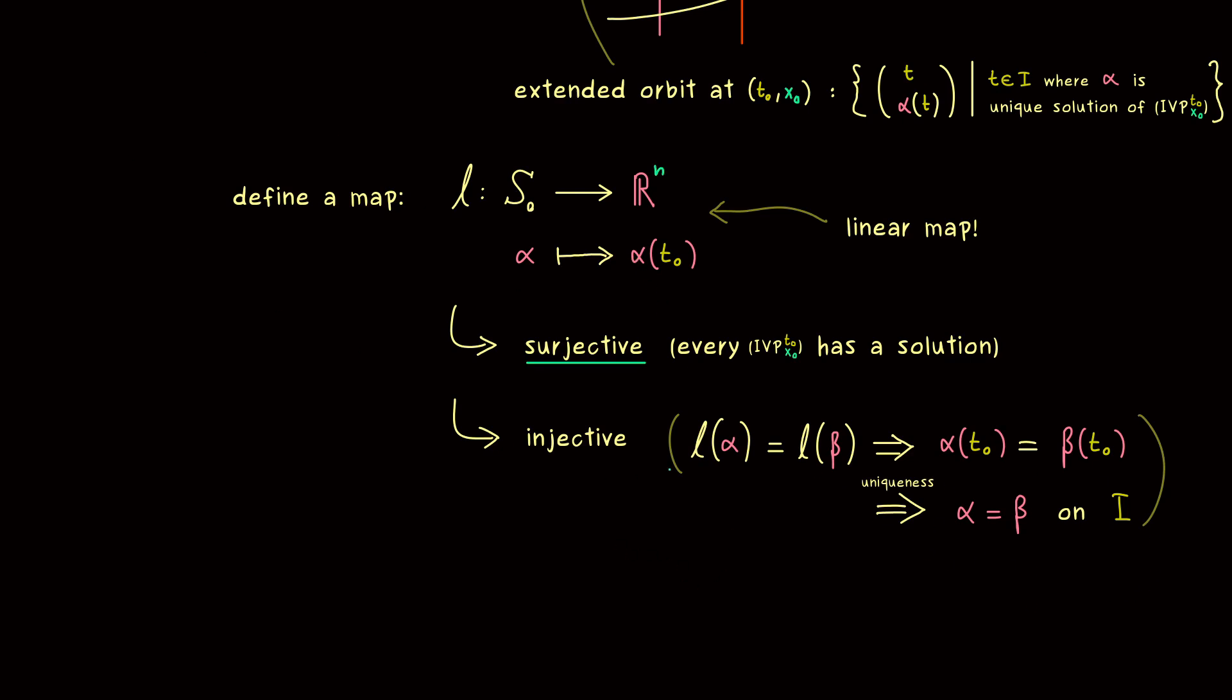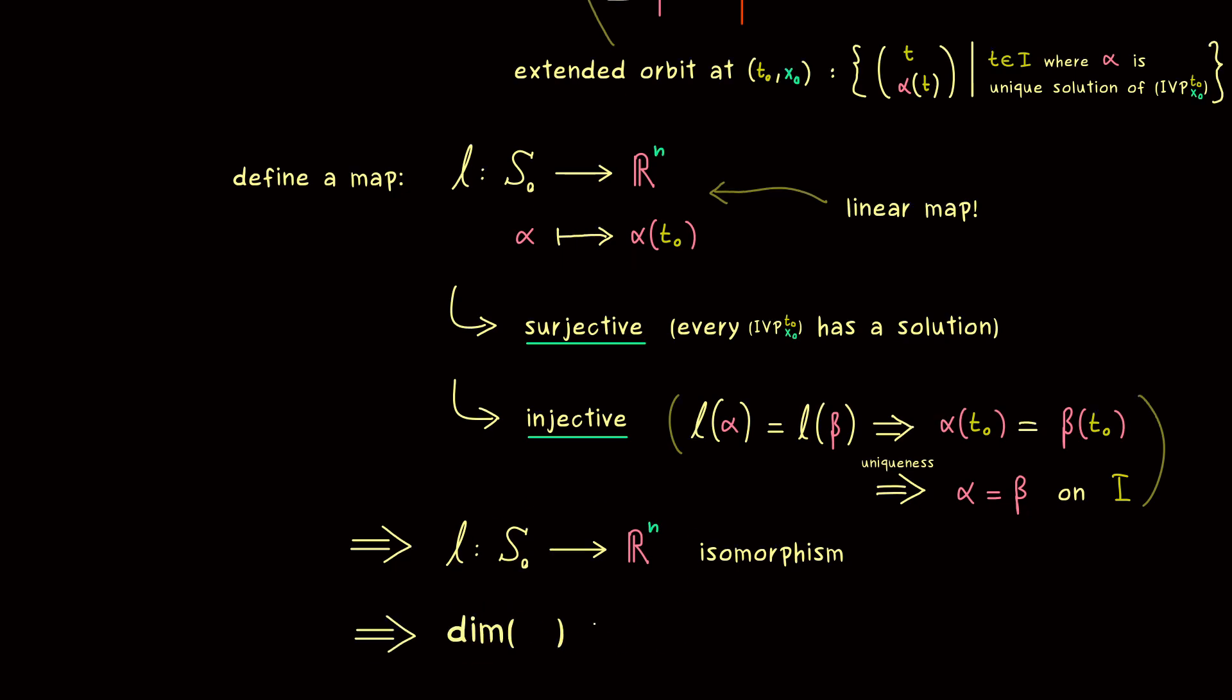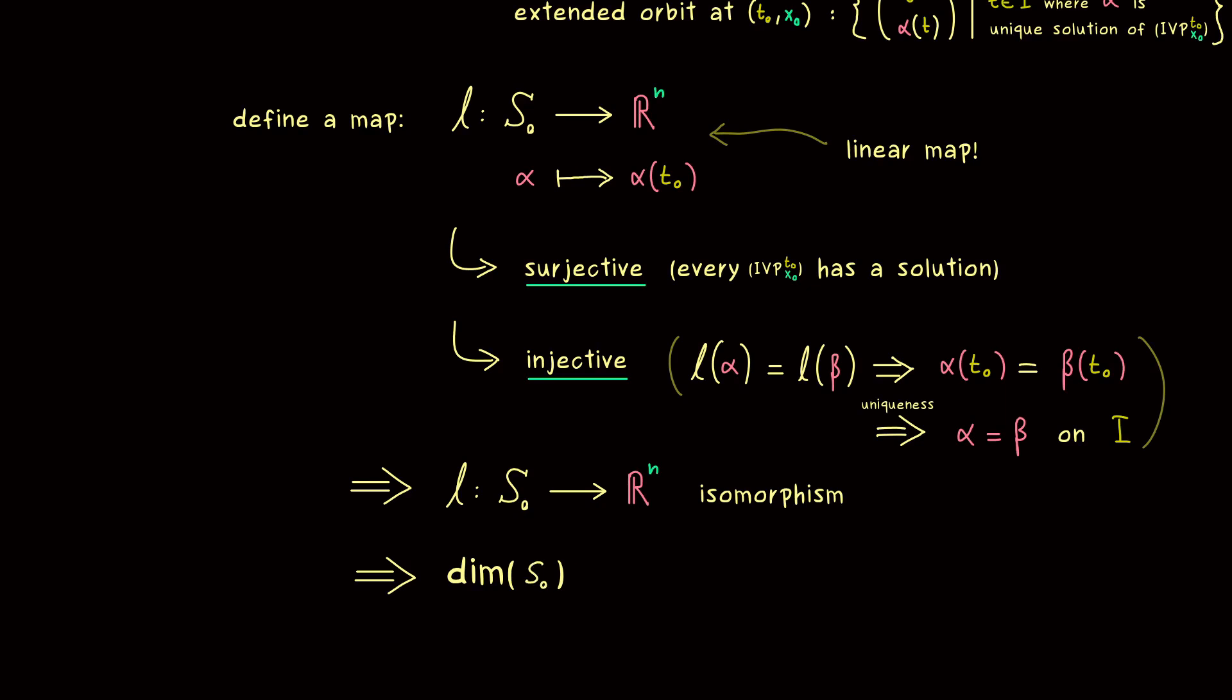So what we actually have here is a linear map that is also bijective. And in linear algebra we call such a nice map an isomorphism. It just tells us that we can translate between the two vector spaces back and forth without losing any information. Therefore, in conclusion, the dimension of the two vector spaces also has to be the same. There we have it, this finally gives us the dimension of S_0. It is the dimension of R^n, which we know is simply n. So there we have it, the solution set of the homogeneous system is only n dimensional. And this is a really helpful result for solving linear ODEs.